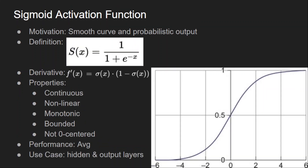Next comes the sigmoid activation function. The motivation is to have a smooth curve instead of hard thresholds like in the step function. We should not have any threshold and the output should indicate probability. That's why the function definition became 1 / (1 + e^(-x)). The exponential ensures all positive values in the output. The graph ranges from 0 to 1, and the output value depends on the quantity of the input, not only on the sign.